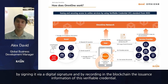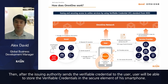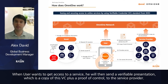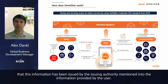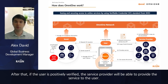After the issuing authority sends the verifiable credential to the user, the user stores it in the secure element of their smartphone. When the user wants to access a service, they send a verifiable presentation — a copy of the verifiable credentials plus a proof of control — to the service provider. The service provider verifies the user by checking the verifiable presentation and leveraging the OmniOne network to confirm the information was issued by the stated issuing authority. If positively verified, the service provider grants the user access to the service.